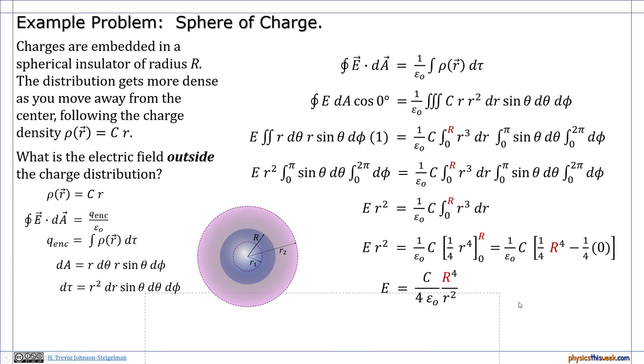Okay, if we take that through again, notice that my R's don't cancel this time because I've got a capital R for the radius of the distribution, and I've got a lowercase r for the position that I'm investigating. Okay, so now my field is E is equal to the fraction C over 4 epsilon naught times the fraction R to the 4th over r squared.